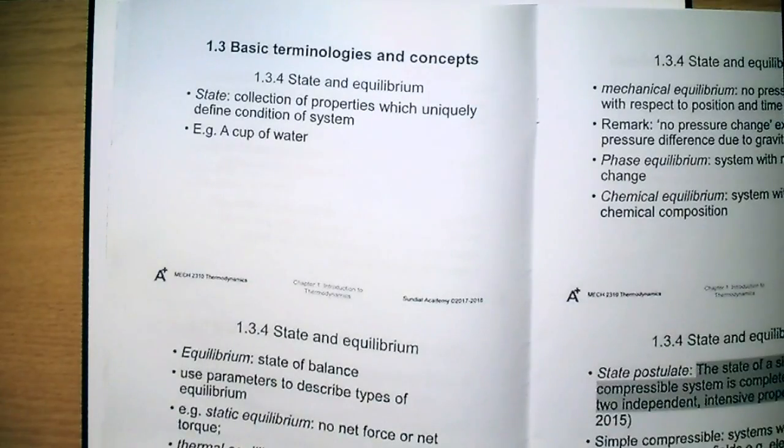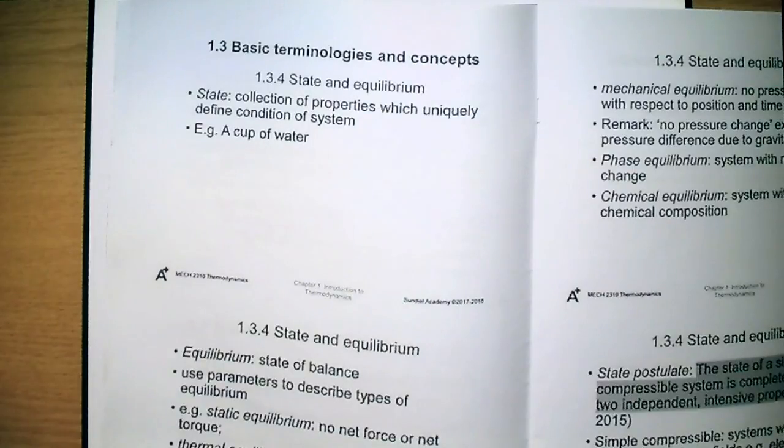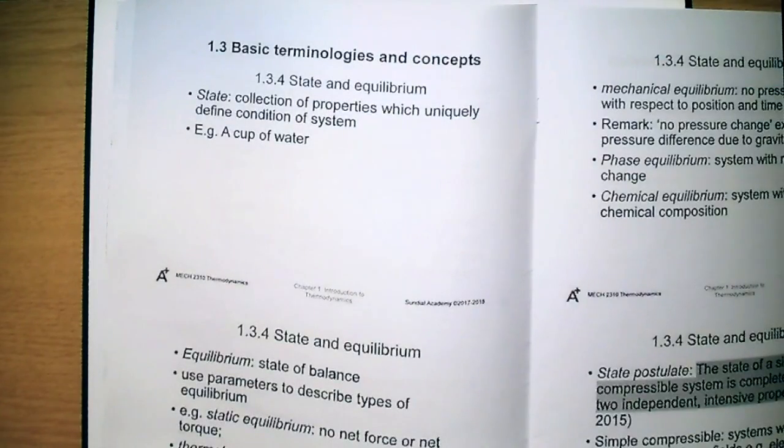Here, it is section 1.3.4, which is state and equilibrium. If a system is not undergoing any change, then all of the properties of it will be fixed, and we can measure it. This collection of properties can uniquely define the condition or the state of a system.